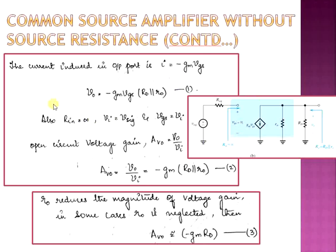For the MOSFET, the input resistance is infinite and the input voltage is equivalent to the signal voltage V_signal. Also, the gate-to-source voltage VGS equals VI. To compute the open circuit voltage gain AV0, that is output voltage divided by input,